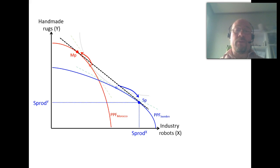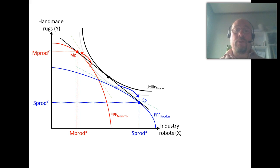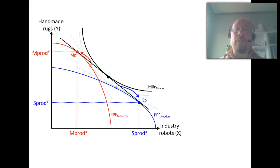When we look at Morocco, the production bundle shows how much of each good is produced there — that amount of industry robots and that amount of handmade rugs. Since we assumed identical preferences in both countries, we draw the utility function valid under trade. The black dotted line gives the relative price in production, and that same relative price applies in consumption. So we have a consumption possibility frontier indicated by the black line, and consumers in each country face this same relative price.